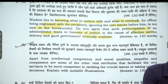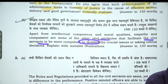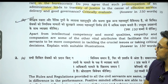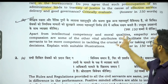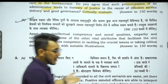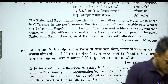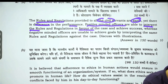The second question: 'Apart from intellectual competency and moral qualities, empathy and compassion are some of the other vital attributes that facilitate civil servants to be more competent in tackling critical decisions.' Then the third question: 'Rules and regulations provided to all civil servants are the same, yet there is a difference in performance. Positive-minded officers are able to interpret rules in favor of the case and achieve success, whereas negative-minded officers interpret the same rules against the case. Discuss with illustrations.'